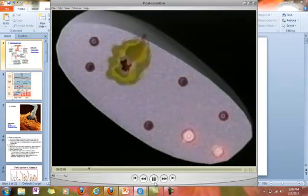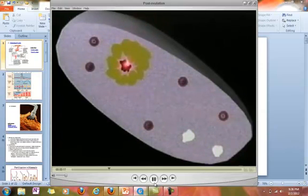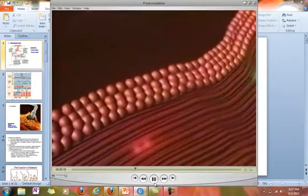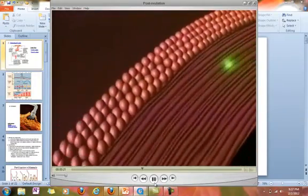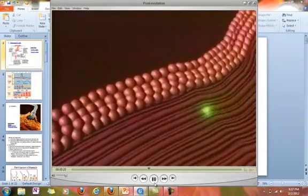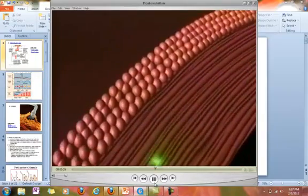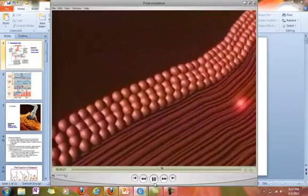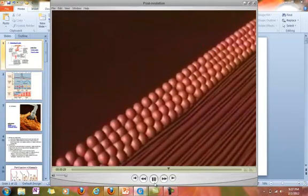After ovulation, the follicle cells that remain in the ovary form a structure called the corpus luteum. This yellow tissue continues to produce estrogen and a second hormone called progesterone. In the uterus, progesterone prepares for the arrival of a future embryo by quieting normal contractions and stimulating endometrial cells to secrete important nutrients.